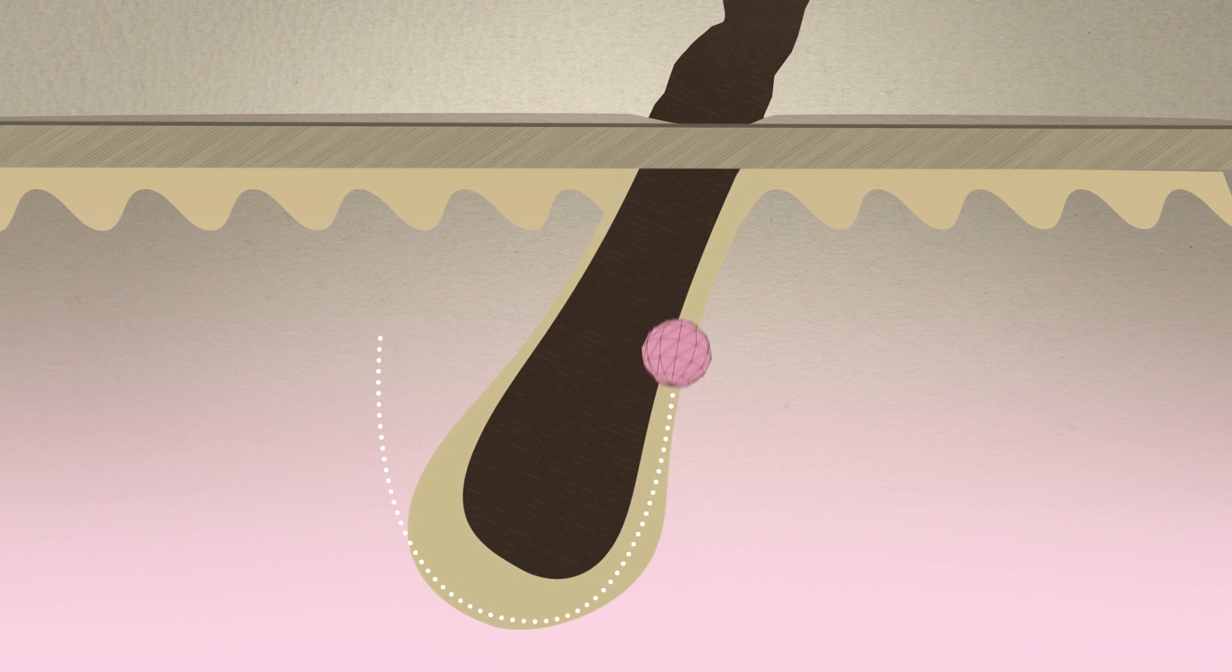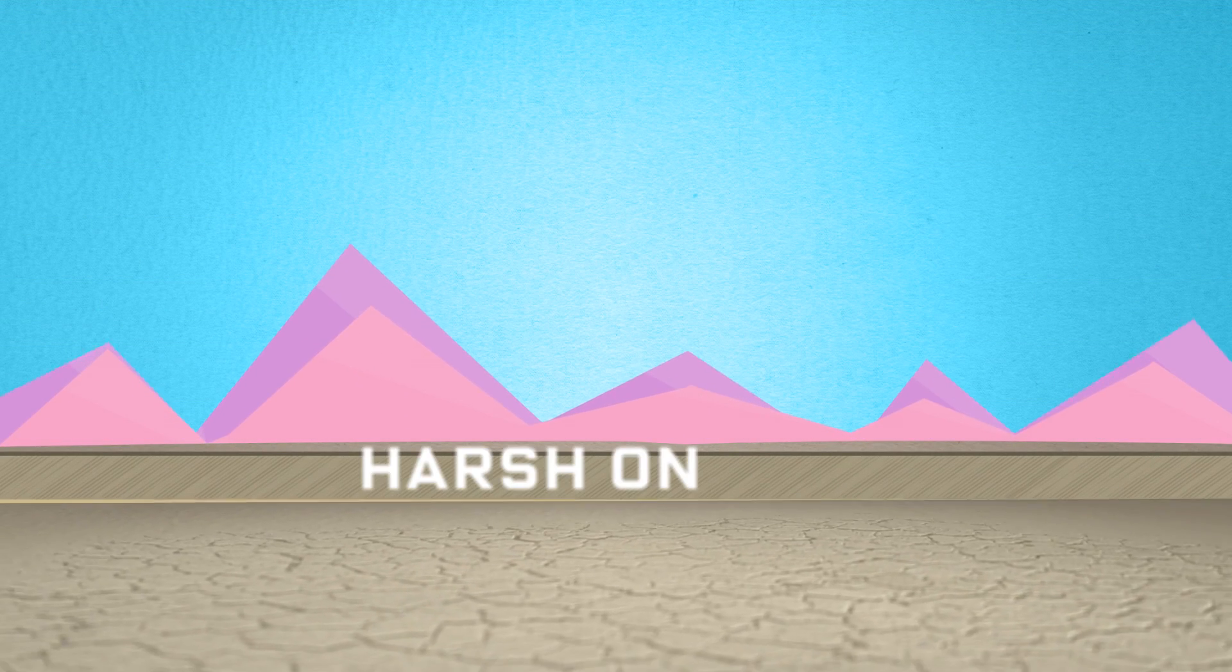It destroys strands at the root, leaving your legs silky smooth. But those ingredients can also be harsh on skin. That's where lanolin comes in.